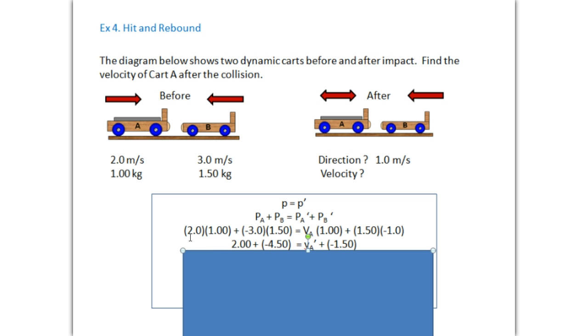So mass of A, two kilograms, times its velocity. B, it's moving to the left. So don't forget to show that's a negative three. So it's a negative three there, times 1.5 kilograms. We don't know the velocity of A, so we leave that out. But we know its mass hasn't changed after the collision. It's still one kilogram. B is 1.5 kilograms. And it's continuing to move to the left. So it should be negative one.